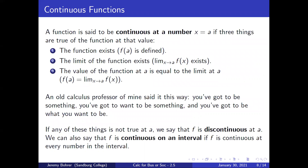A function is said to be continuous at a number x equals a if three things are true of the function at that value. First, f(a) is defined. Second, the limit as x approaches a of f(x) exists. Third, the value of the function at a equals the limit at a: f(a) equals the limit as x approaches a of f(x). An old calculus professor once said it this way: you've got to be something, you've got to want to be something, and you've got to be what you want to be.